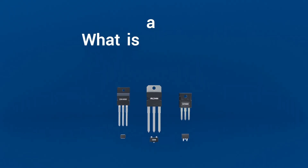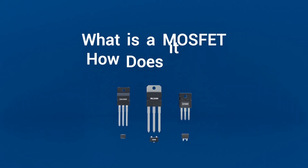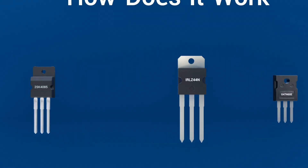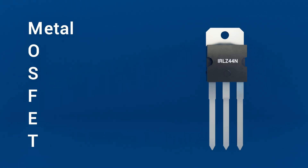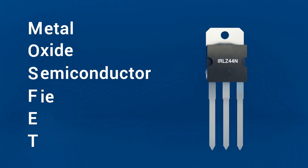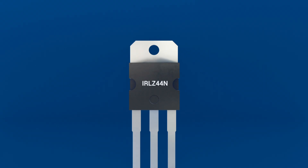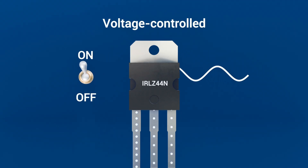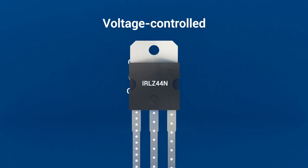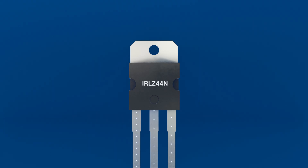What exactly is a MOSFET and how does it work? A MOSFET, metal oxide semiconductor field effect transistor, is essentially a voltage-controlled switch or amplifier, although not many people use it as an amplifier.